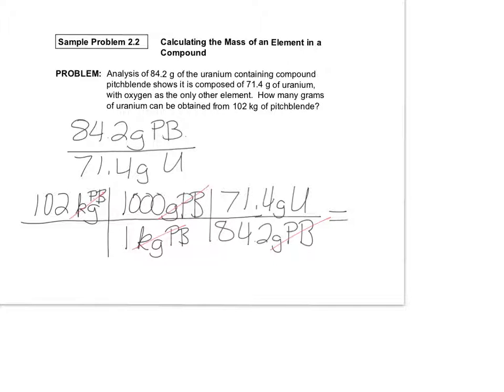All right, so I got, and I'm going to write this in scientific notation. I got 8.65 times 10 to the 1, 2, 3, 4, times 10 to the 4 grams of uranium.